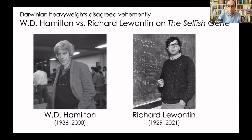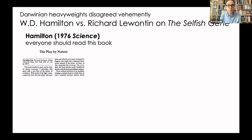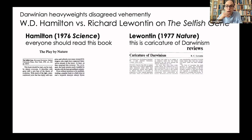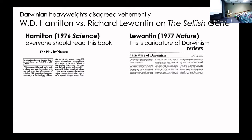They both reviewed The Selfish Gene. Hamilton reviewed it for Science, saying it represents an excellent description of the current state of evolutionary theory and should be read by everyone. In contrast, writing for Nature, Lewontin described it as a caricature of Darwinism, calling its thesis Panglossian — a kind of derision for a form of evolutionary biology that would become more famous a couple of years later in the Spandrels of San Marco paper he published with Stephen Jay Gould.